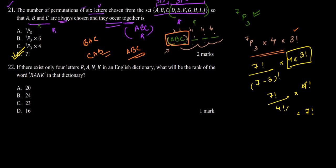Moving on to question number 22: if there exist only 4 letters R, A, N, K in an English dictionary, what will be the rank of the word RANK in that dictionary? We have 4 letters R, A, N, K. First we need to put these 4 letters in alphabetical order, because in an English dictionary everything is in alphabetical order. Starting from the very first letter: A, then K, then N, then R — this is the alphabetical order.